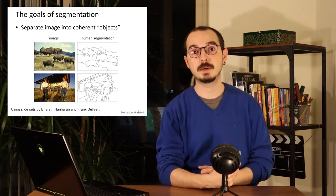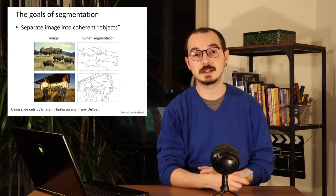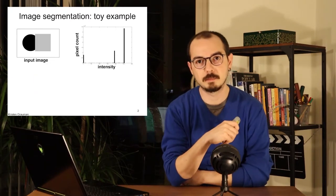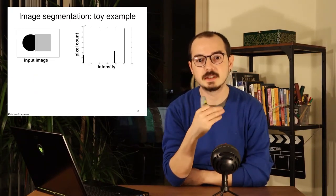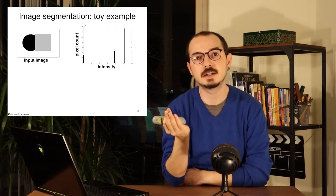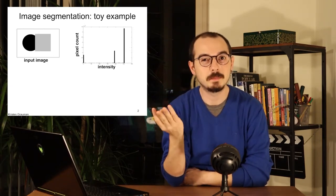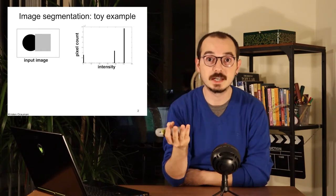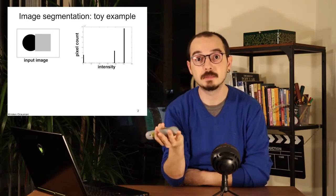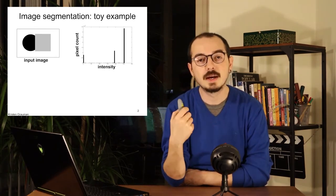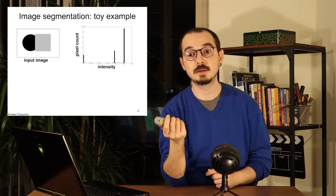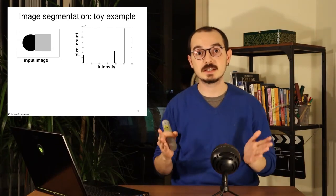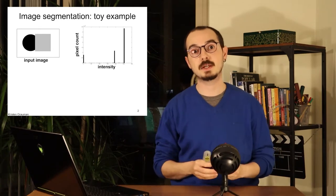But we will talk about some more basic segmentation methods in computer vision today. Let's start with a toy example. We can see clearly what we mean by segments — we will try to get the white, black, and gray regions of the image as different segments. When we look at the histogram of this image, we can see the three segments very clearly separated and easy to pick.